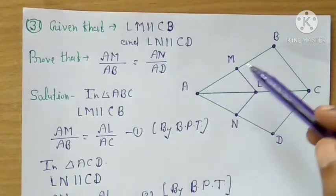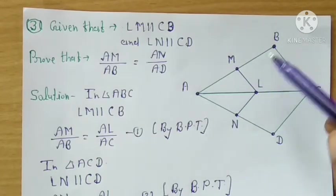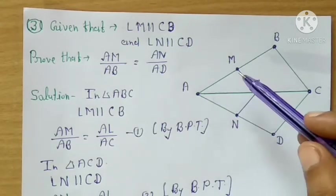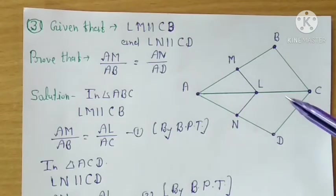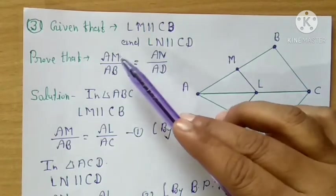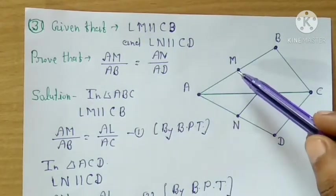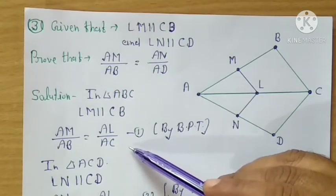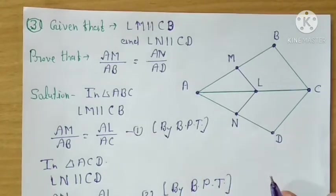As I told you, whichever way you write the ratio on one side, you write the corresponding ratio on the other side. If here I write AM upon BM, then there I write AL upon CL. But since the question needs AM upon AB, I write AM upon AB on one side, so on the other side I must write AL upon AC. So AM upon AB equals AL upon AC — this is equation 1, by BPT.